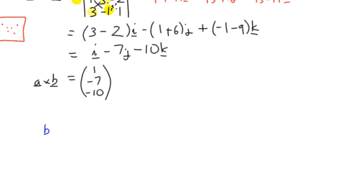We can go ahead and find b cross a. Just out of interest, we're going to use the same two vectors, so it's obviously going to be connected. We've got i, j, k, but this time we've got 3, negative 1, 1 and we've got 1, 3, negative 2, so we've got vectors a and b swapped around.